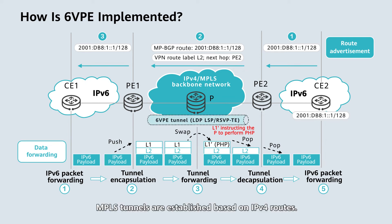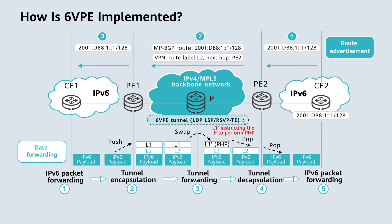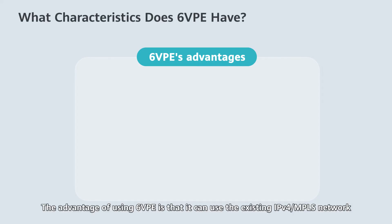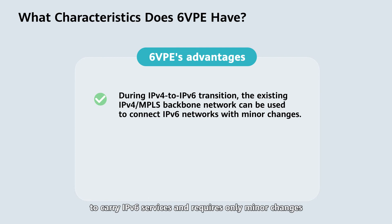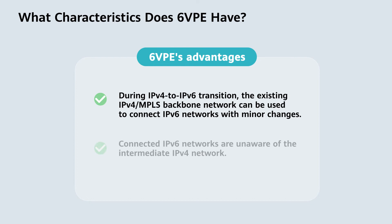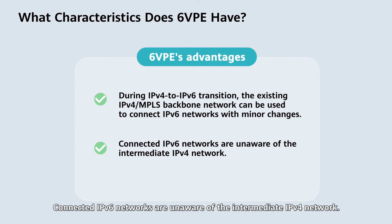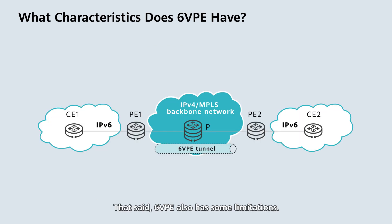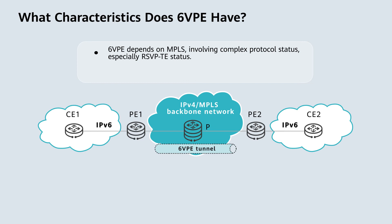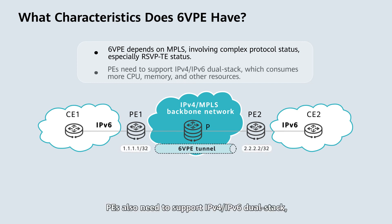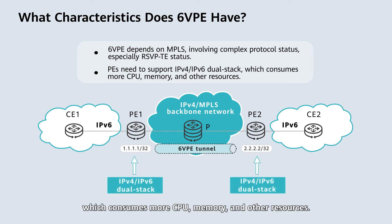MPLS tunnels are established based on IPv4 routes. Therefore, PEs must support IPv4/IPv6 dual stack. Now, let's have a look at 6VPE's features. The advantage of using 6VPE is that it can use the existing IPv4/MPLS network to carry IPv6 services and requires only minor changes to the IPv4 MPLS network to connect IPv6 networks. Connected IPv6 networks are unaware of the intermediate IPv4 network. That said, 6VPE also has some limitations: it depends on MPLS and involves complex protocol states, especially RSVP-TE states. PEs also need to support IPv4/IPv6 dual stack, which consumes more CPU, memory, and other resources.